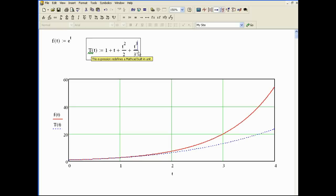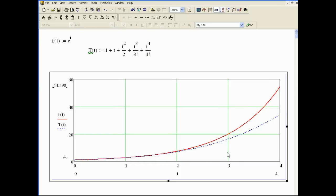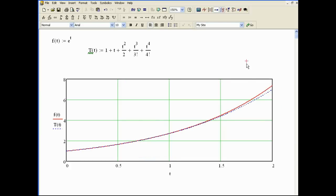Well, the way you reduce the error as you get farther from 0 is just to add more terms. So there's t to the 4th divided by 4 factorial. And you can see the error got much smaller. And down here around 2, it's very small.